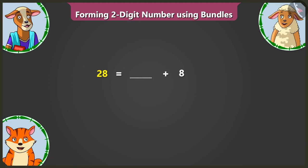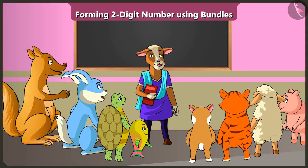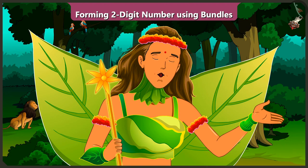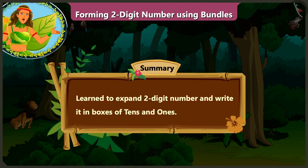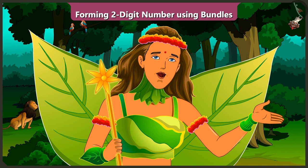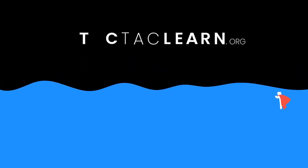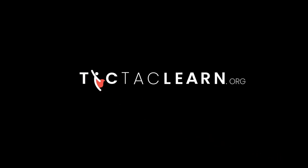Come on, Billy — try to expand the numbers written here on the board. 28 has 2 tens and 8 ones. So 28's expansion is 20 and 8. Very good, children. Now see you in the next class. In this video you learned to expand 2-digit numbers and write them in boxes of 10s and 1s. In the next video, through examples, we will learn how to expand 2-digit numbers and understand it well.